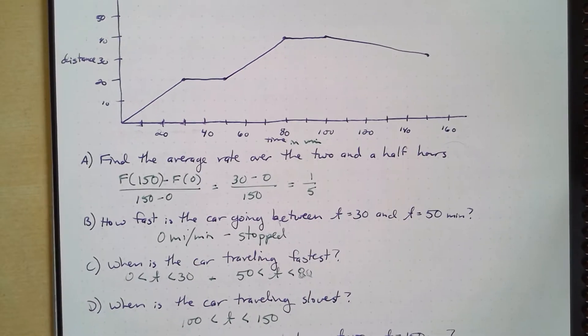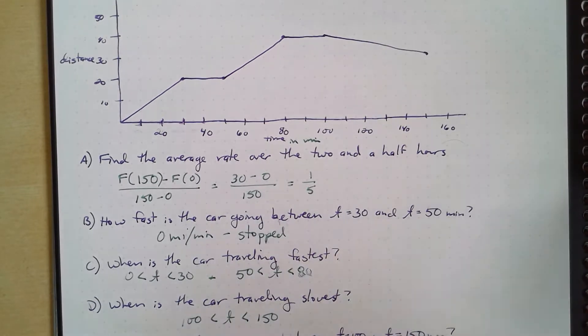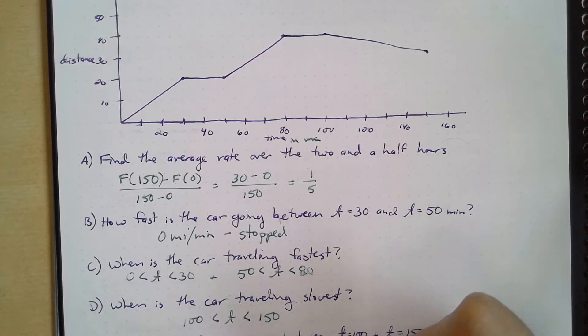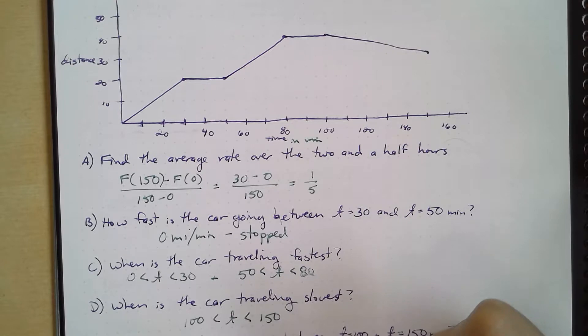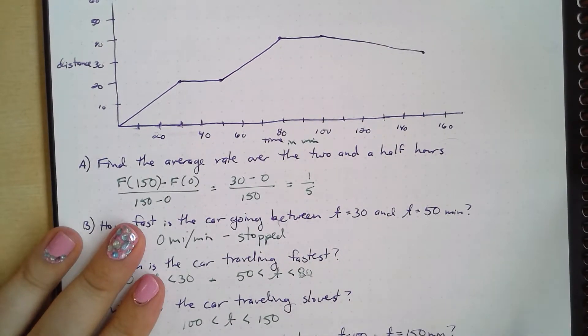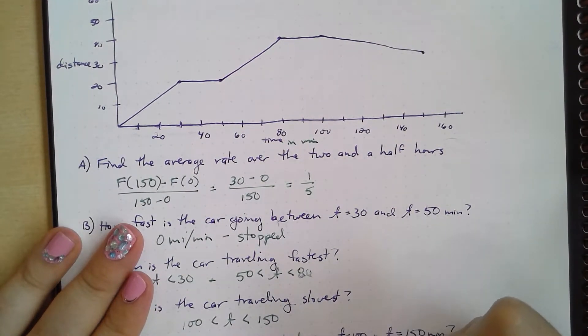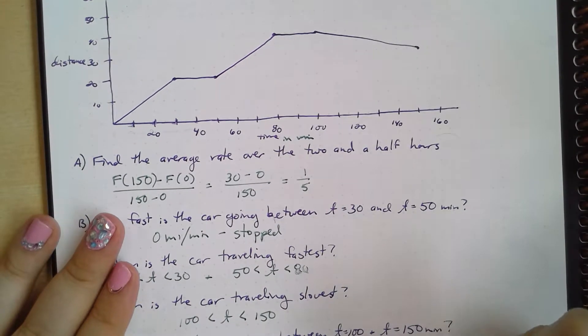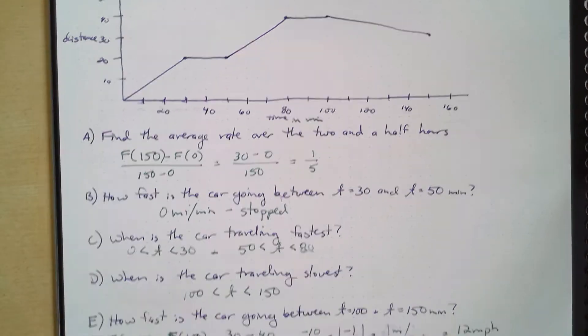Speed cannot be negative, right? Let's take the absolute value of that. So we get one mile per five minutes. And if you convert that, you will find out that that's 12 miles per hour.